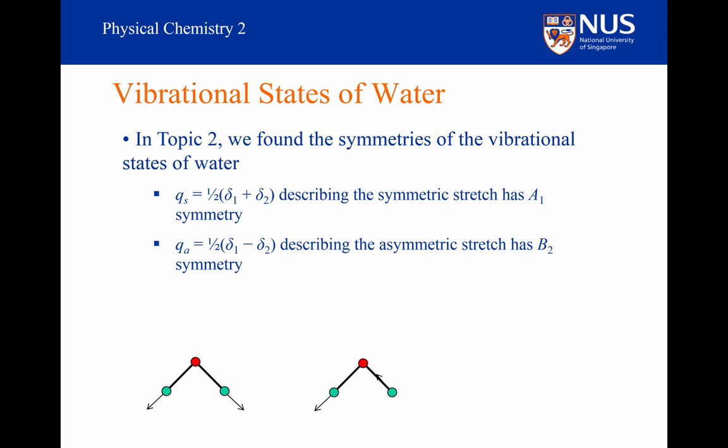The asymmetric stretch, Qₐ, can be identified as the vibration in which the displacements of the OH bonds, δ₁ and δ₂, are out of phase with each other. This normal mode has B2 symmetry. And the bending vibration, Qθ, can be identified as the vibration in which the bond angle is increasing and decreasing. This normal mode also has A1 symmetry.